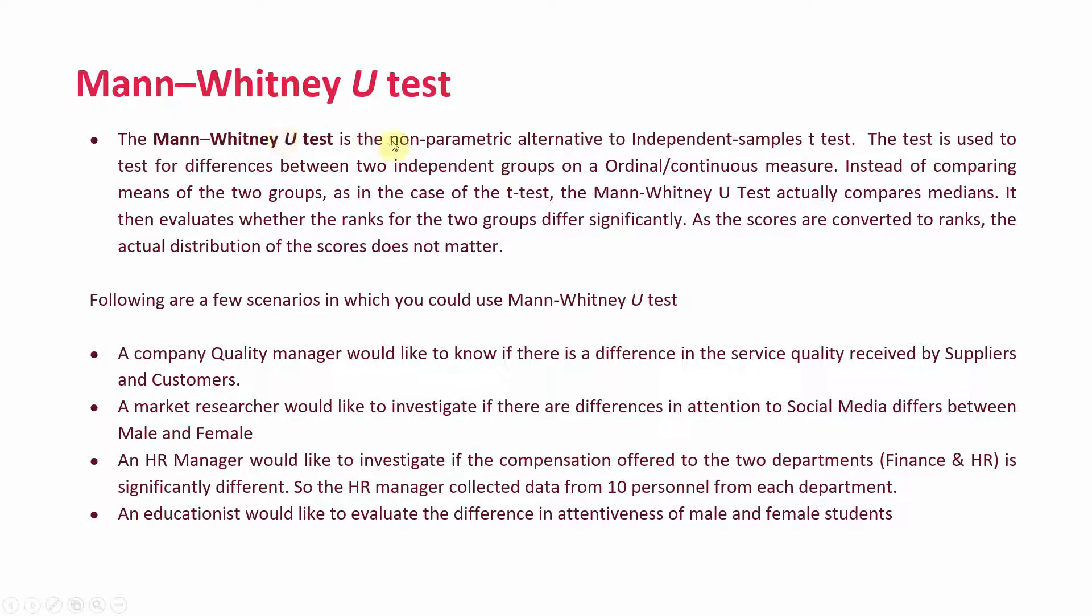The Mann-Whitney U-Test is the non-parametric alternative to independent samples t-test. The test is used to test for differences between two independent groups on an ordinal or continuous measure. Instead of comparing means of two groups, as is the case in the independent sample t-test, the Mann-Whitney U-Test actually compares medians. It then evaluates whether the ranks for the two groups differ significantly. As the scores are converted to ranks, the actual distribution of the score does not matter.